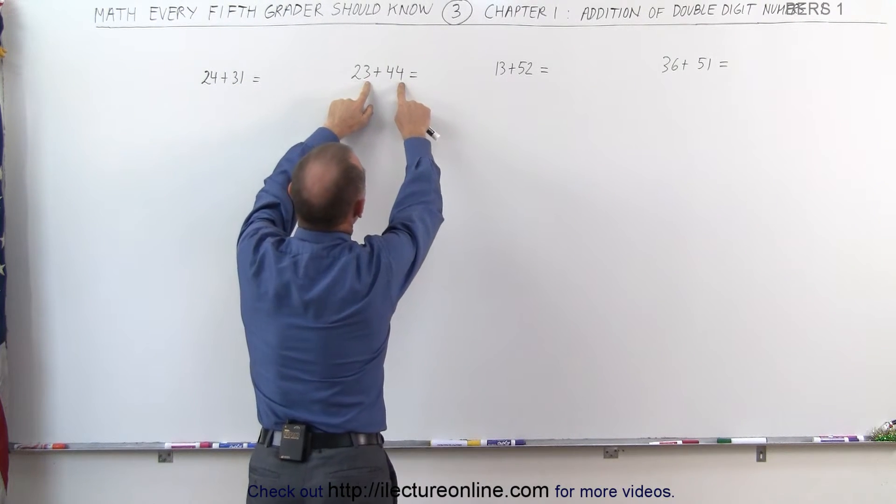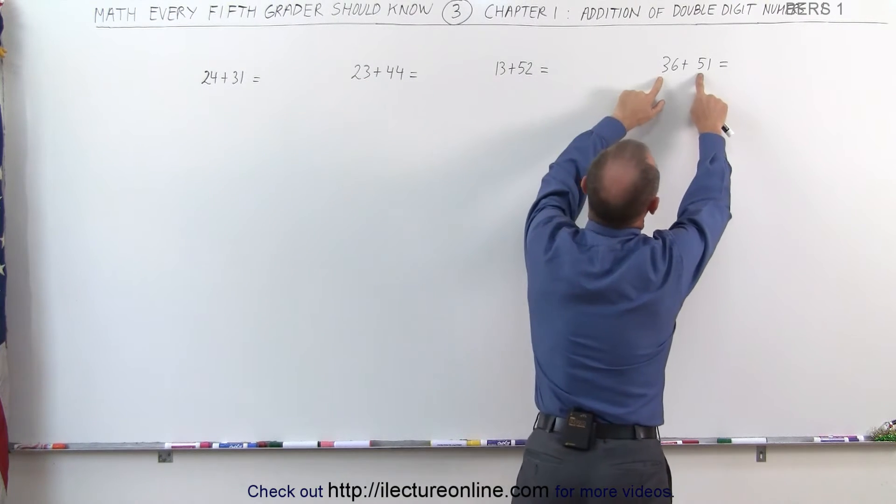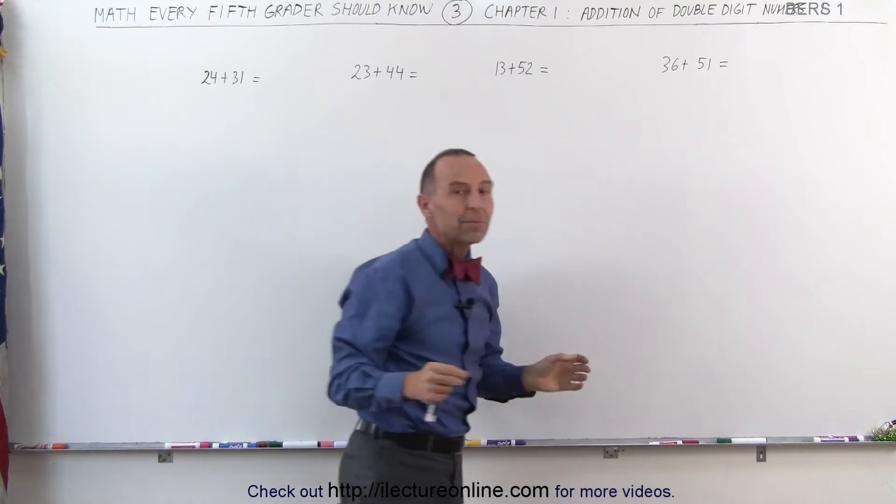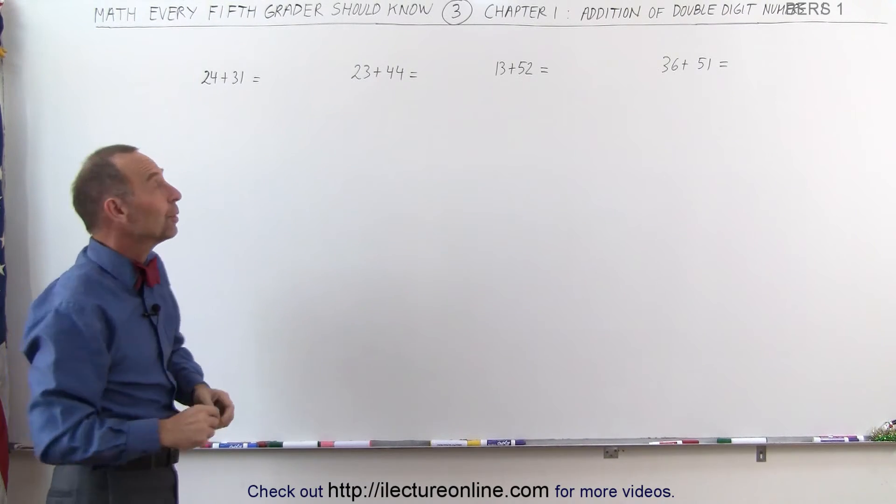Again, 2 plus 4 is less than 10, 3 plus 4 is less than 10, 1 plus 5, 3 plus 2, 3 plus 5, and 6 plus 1. Every time you get a number less than 10, that would be the first type of double-digit numbers we need to add.